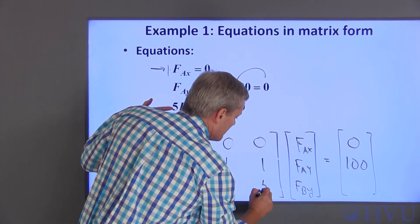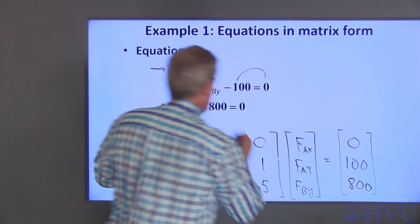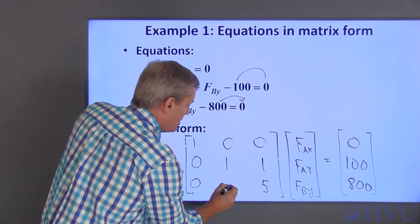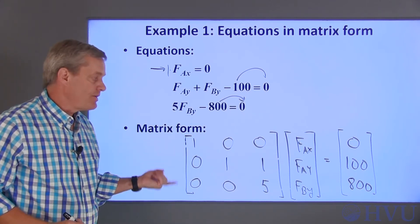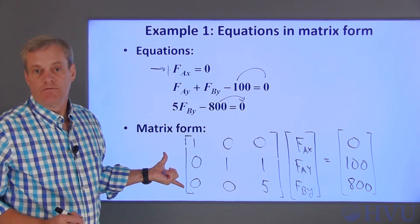The last equation is five times FBY is equal to eight hundred, moving this to the other side. There's no FAX and there's no FAY. So this is the matrix form of our equations. Next, I'll talk about solving this system of equations.